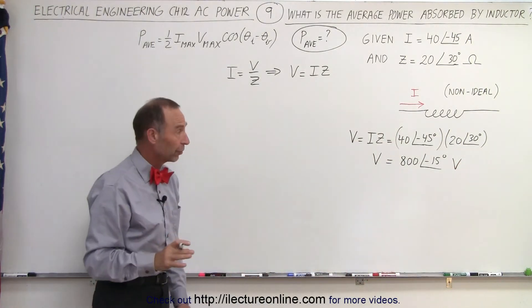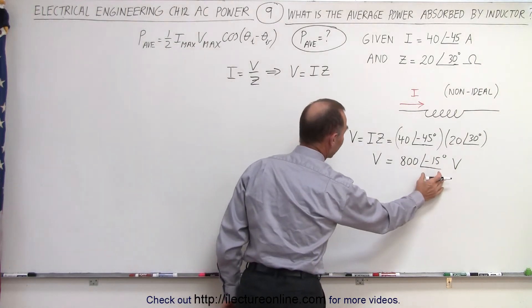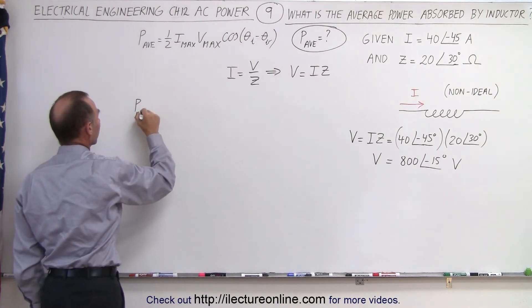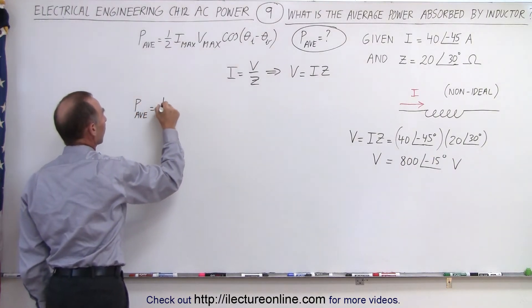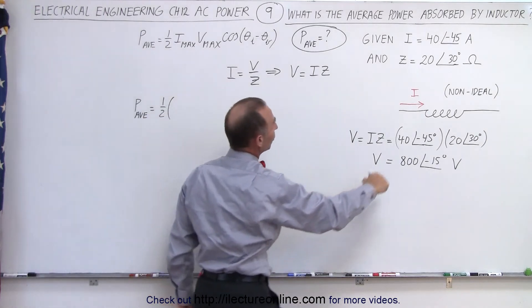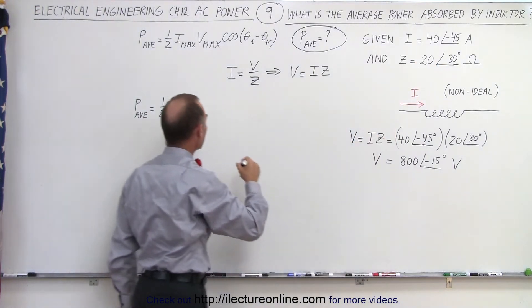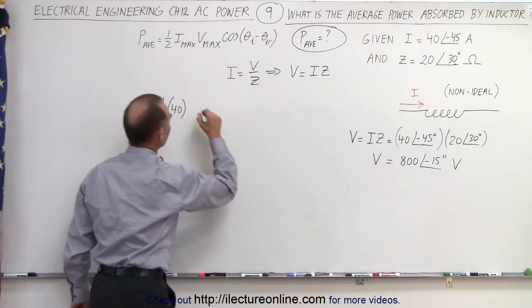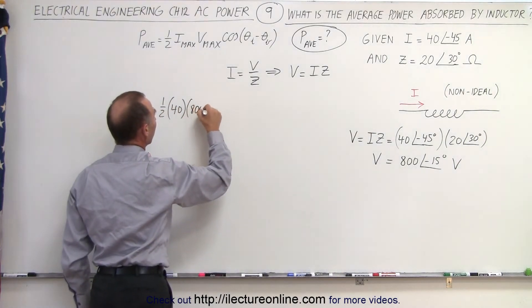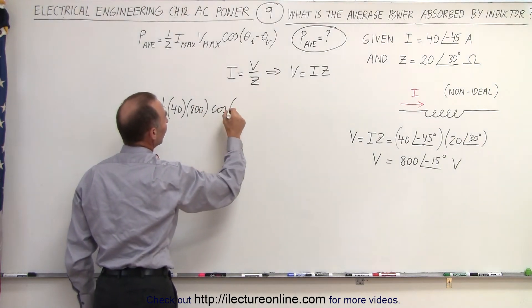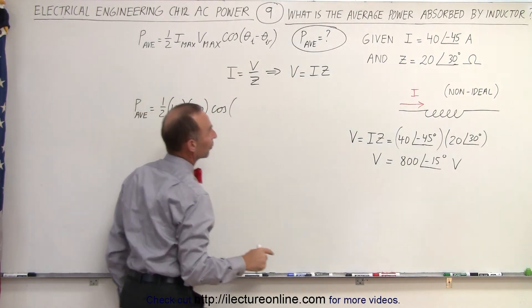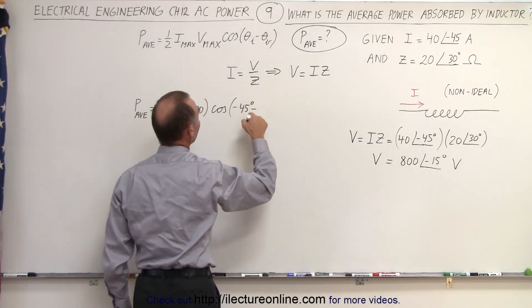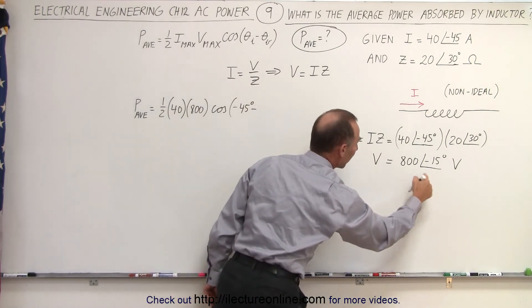So now that we have the voltage, we have the maximum amplitude of the voltage and the phase angle, we can now find the average power. So the average power is going to be equal to one half times the maximum current, which can be gotten from here, that's 40, times the maximum voltage, which we can get from here, that's 800. And then times the cosine of the difference between the phase angles, the phase angle of the current I is minus 45, and subtract from that the phase angle of voltage, which is a minus 15.